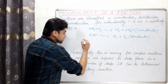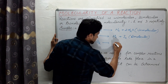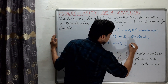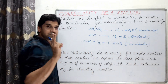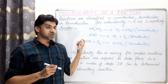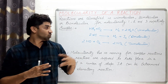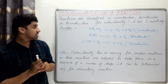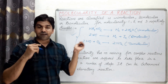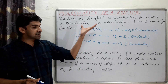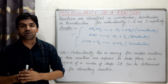Example of trimolecular reaction: nitric oxide combines with oxygen to form nitrogen dioxide. It is a trimolecular reaction. In this case, two molecules of NO and one molecule of oxygen collide simultaneously to bring about the reaction. All these are elementary reactions which occur in a single step — examples of unimolecular, bimolecular, and trimolecular reactions.